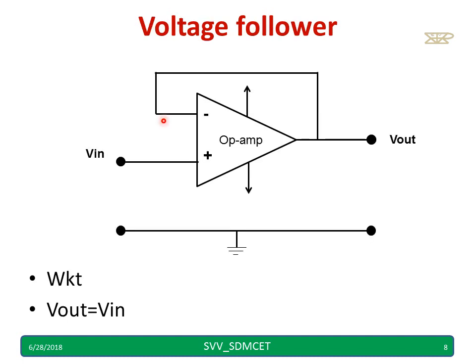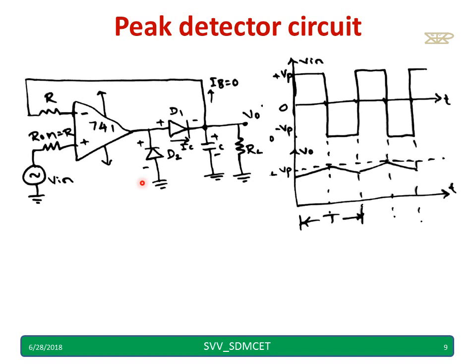The voltage follower circuit ensures that the output will be equal to the input. Using those two circuits — the voltage follower and the diode-capacitor combination — this is the peak detector circuit diagram.